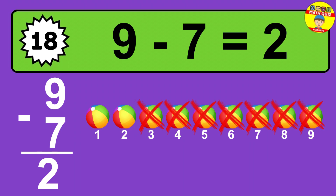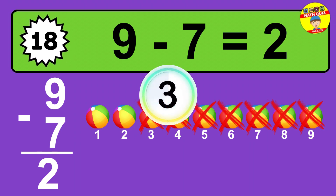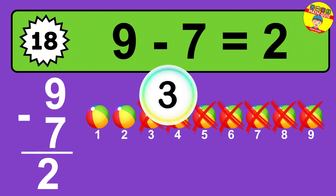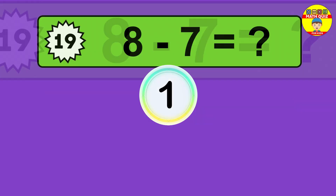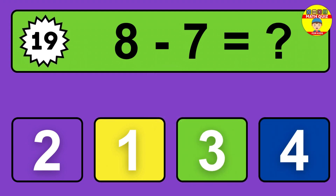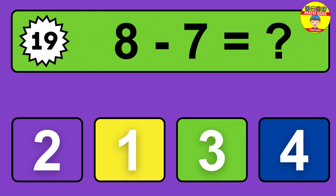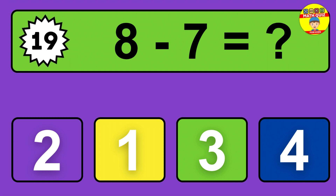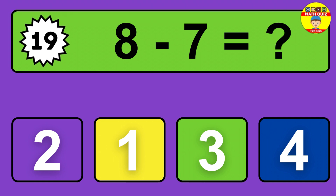Question twenty: six minus four equals what? The answer is six minus four is two. Let's count it: one, two.